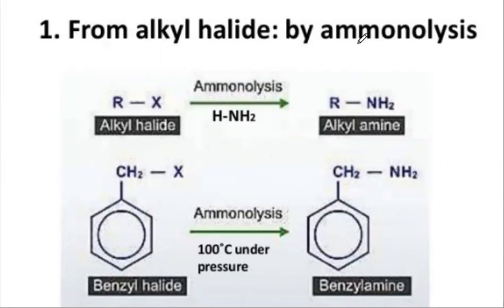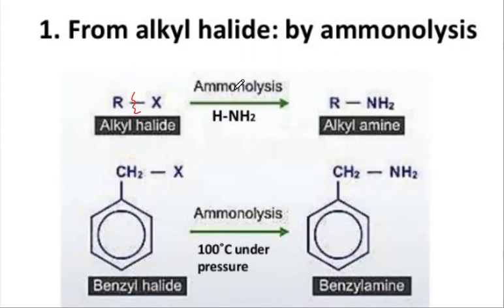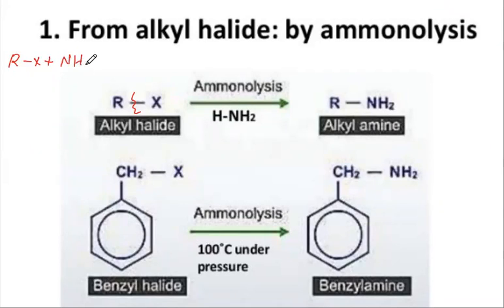Remember, by using the ammonolysis method — just like hydrolysis breaks components using water — here we are breaking the bond between the alkyl group and halogen atom by using ammonia. That's why we call it ammonolysis. Whenever alkyl halides react with ammonia, they give amines — both aliphatic amines and aromatic amines we can prepare.